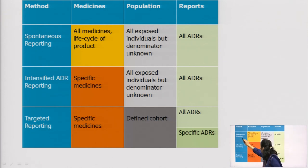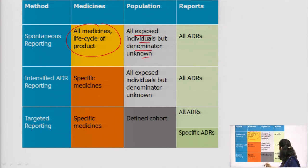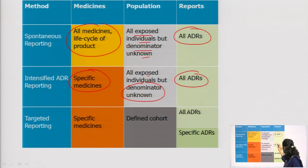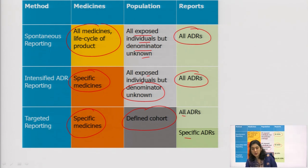Comparing the different forms of passive pharmacovigilance: In spontaneous reporting, monitoring covers all medicines throughout the whole life cycle of the product, the population includes all exposed individuals but denominators are unknown, and all ADRs are reported. In intensified ADR reporting, specific medicines are covered, all exposed individuals are included but denominators are still unknown, and all ADRs are collected. In targeted reporting, it is for specific medicines in a defined cohort, and both all ADRs as well as specific ADRs are collected.